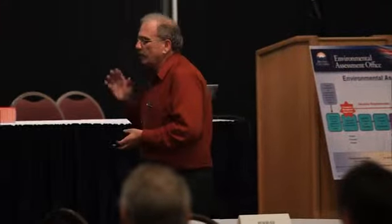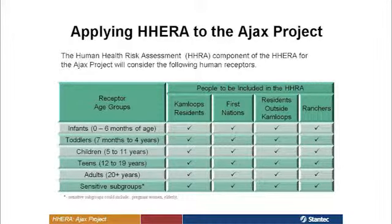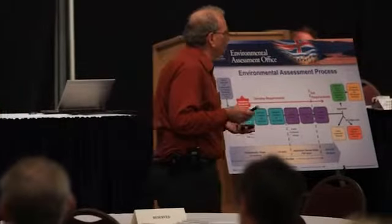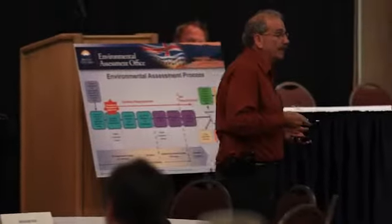So how do we fit all of this into Ajax? Looking at the human health side, we do exactly what the federal and provincial regulators expect us to do. We will look at all of the age groups for people — everything from infants through to seniors, including sensitive subgroups such as the elderly, pregnant women, and very young children. We're anticipating looking at four different groups: Kamloops residents, First Nations, residents who live outside of Kamloops, and ranchers. We distinguish between residents outside Kamloops and ranchers to make sure we capture any difference in the amount of locally grown food that they eat, because we want to overestimate, not underestimate.